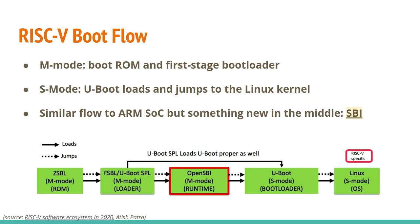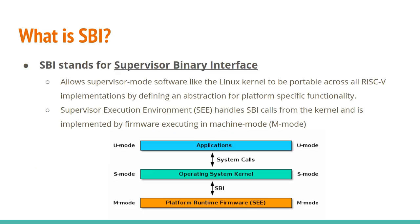The RISC-V boot flow looks similar to what you'd find on an ARM SoC: bootrom, first stage bootloader, and then U-Boot that loads and jumps to the Linux kernel. But we have something new in the middle for RISC-V — SBI, the Supervisor Binary Interface. This allows supervisor mode software like the Linux kernel to be portable across all RISC-V implementations by defining abstraction for platform-specific functionality. The supervisor execution environment handles SBI calls from the kernel, implemented by firmware executing in machine mode.